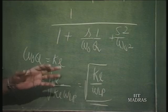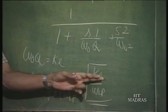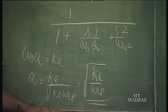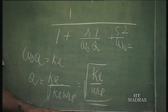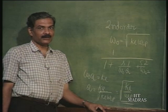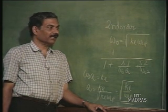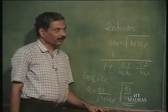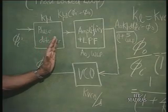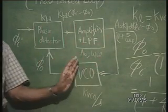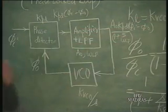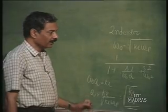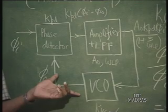A good phase locked loop will invariably be a high Q circuit, because K_L is the loop gain and must be made large. So root of K_L over omega_Lp is normally very high, meaning a good phase locked loop is a second order system whose poles are already very near the imaginary axis. Additional phase shift within the loop will make it unstable. Therefore, we must be extremely careful not to put anything other than a first order low pass within the loop — any additional filtering must be placed outside the loop.